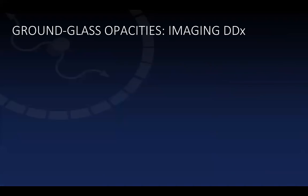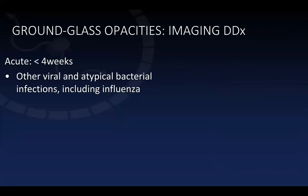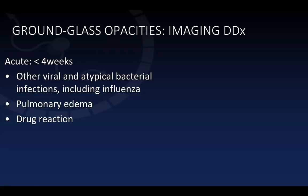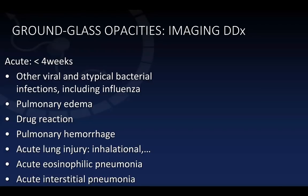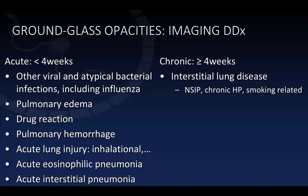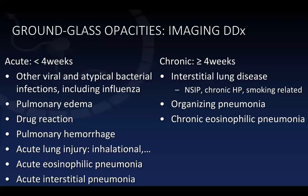The imaging differential diagnosis of ground glass opacities is fairly broad. At the top of the list are other viral and atypical bacterial infections including influenza, pulmonary edema, drug reaction, pulmonary hemorrhage, acute lung injury, inhalational causes, and acute eosinophilic pneumonia and acute interstitial pneumonia. Chronic causes include interstitial lung disease such as NSIP, chronic hypersensitivity pneumonitis, smoking-related lung diseases, organizing pneumonia, vasculitis, and the rare entity pulmonary alveolar proteinosis.